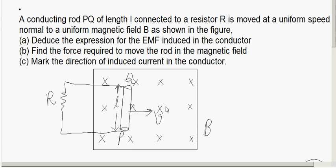How did the flux change? The magnetic field is uniform. The change in flux is due to the motion of the conductor. When the conductor is moved towards the right, the area swept by the loop inside the magnetic field changes.